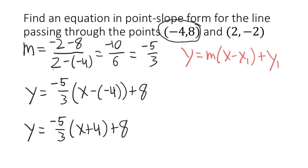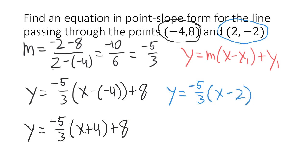We could just as easily have used the other point and ended up with an equation that looked different but was equivalent. Using the second point (2, negative 2), the point-slope form would have been y equals negative 5 over 3 times (x minus 2) plus negative 2.